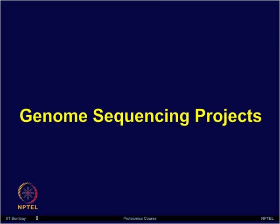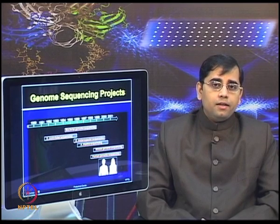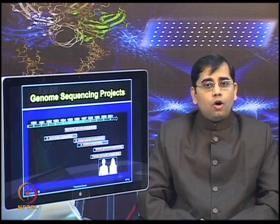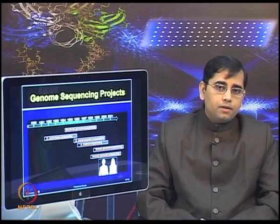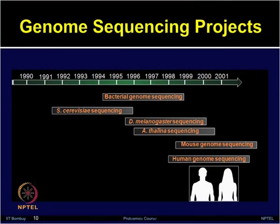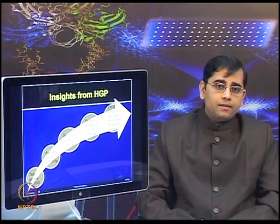Genome sequencing projects aim to decipher the complete genome sequence of all chromosomes of an organism. Several such projects were initiated and successfully accomplished. Sequencing the genome of higher organisms such as humans was very challenging, but researchers showed great team effort, developed methods, and successfully completed the draft sequence in 2001 and the complete sequence in 2003. On the timeline, you can see sequencing of various organisms progressing from 1990 to 2001. The Human Genome Project provided insights including that the total number of genes is estimated to be around 25,000.